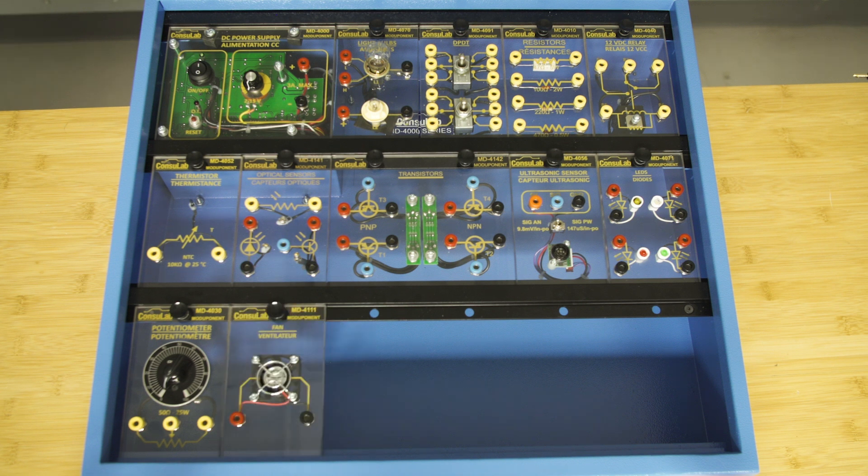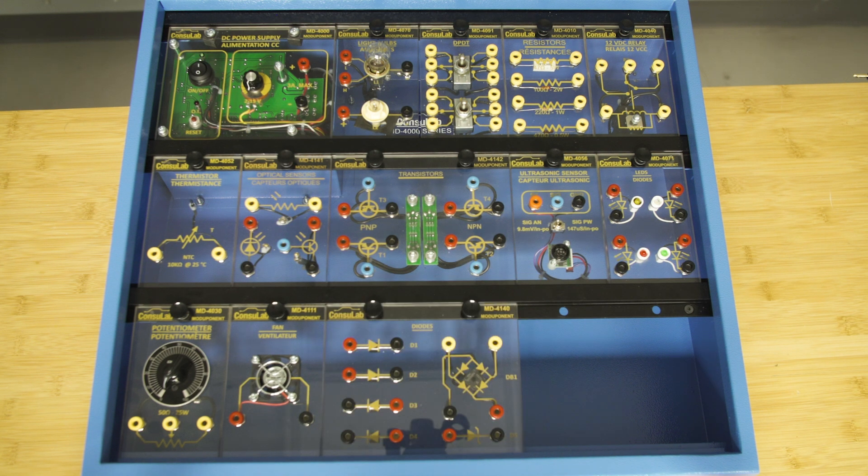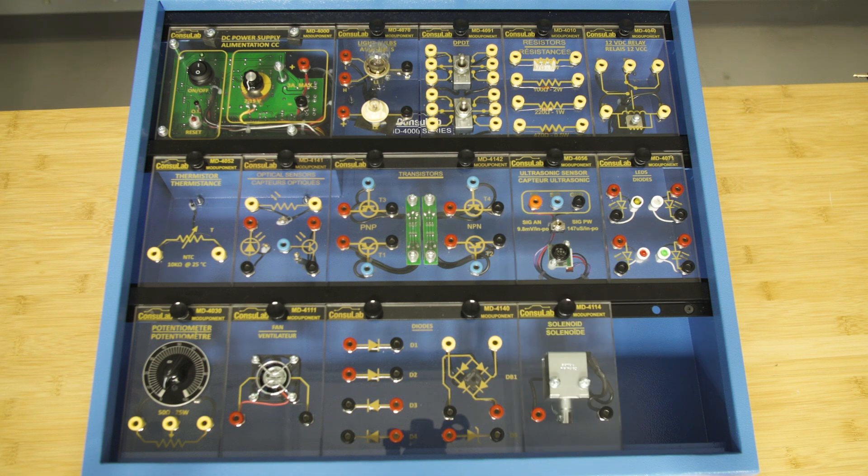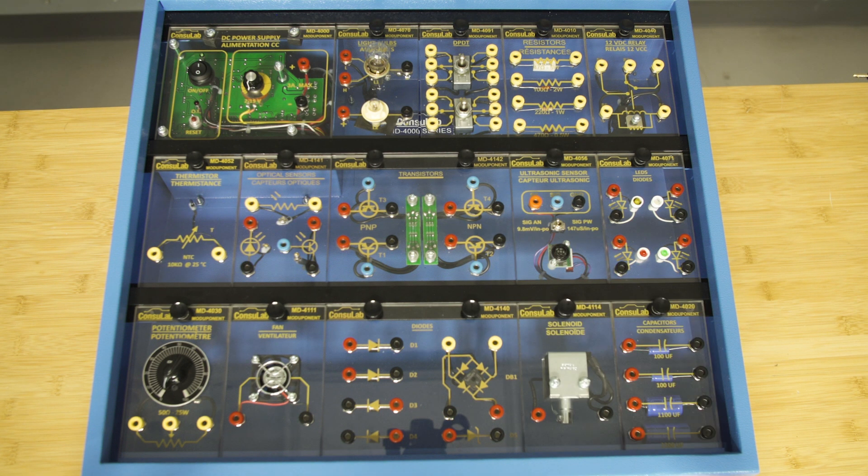Next, we have a fan, and you can see that in conjunction with the fan, a relay, and the thermistor, you can very easily demonstrate cooling fan circuits. We also have diodes and rectifiers, followed by a solenoid, and lastly, the condensers. All of these components and modiponents have been chosen by our educational experts, and we've developed student exercises and curriculum for all of them so that you have a turnkey package to save precious time in your setup and getting your classroom ready.